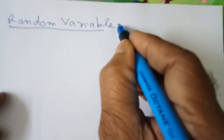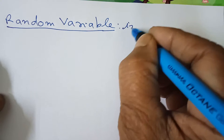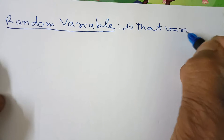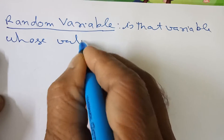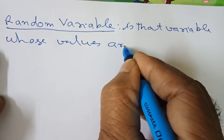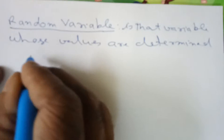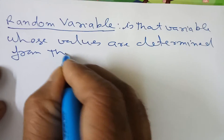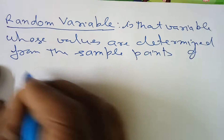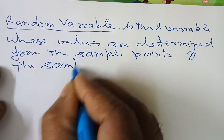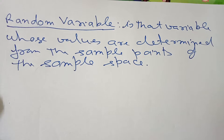This word is used in probability theory. So, random variable is that variable whose values are determined from the sample points of the sample space. This is the main definition of random variable.